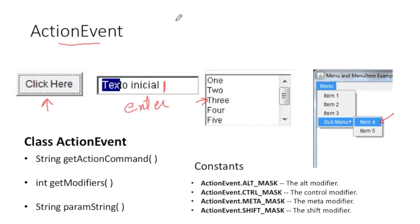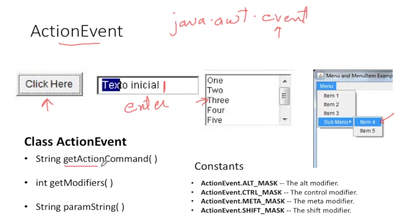ActionEvent is a built-in class available in the java.awt.event package, where all events are present. Some important methods of the ActionEvent class include: getActionCommand(), which returns a string — it returns the label of a button, the text inside a text field, the text of a list item, or the menu item name. paramString() also returns a similar string value.